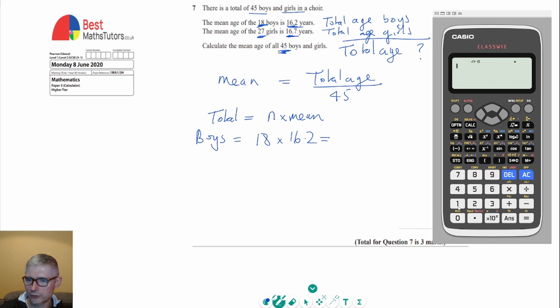So if you do that on the calculator, we've got 18 times 16.2. We've got that as a fraction, we're just going to press the SD button, and we've got the total age for all the boys is 291.6.